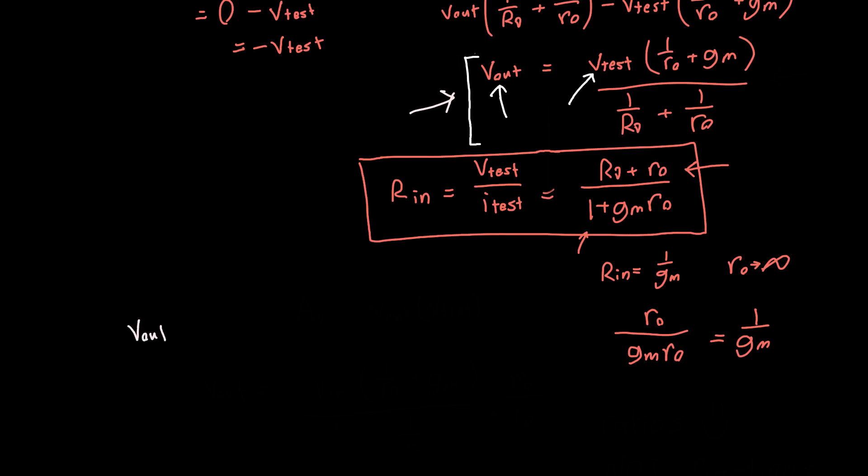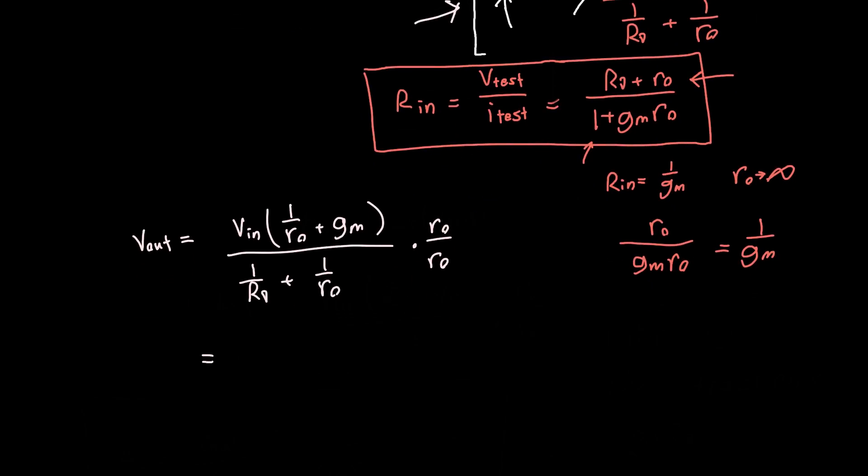That's kind of cool. If we rewrite it, it's just V out equals V in 1 over RO plus GM divided by 1 over RD plus 1 over RO. This is kind of ugly, so I want to multiply everything by RO over RO. We get V in times 1 plus GM RO divided by 1 plus RO over RD. And if we divide both sides by V in, we get the voltage gain.